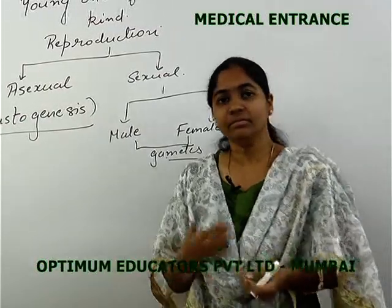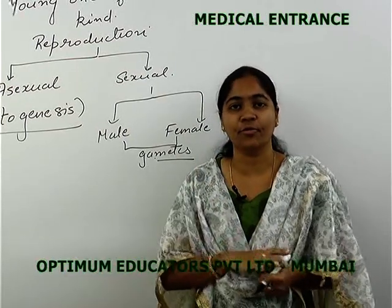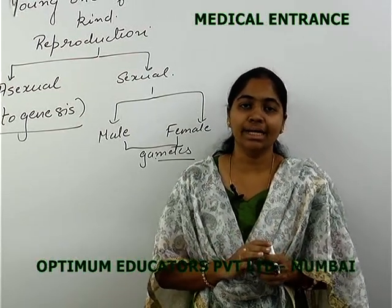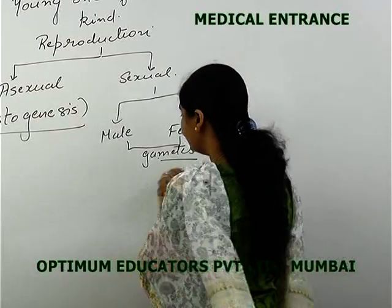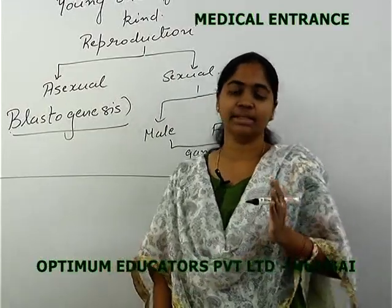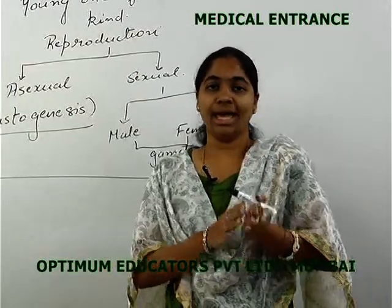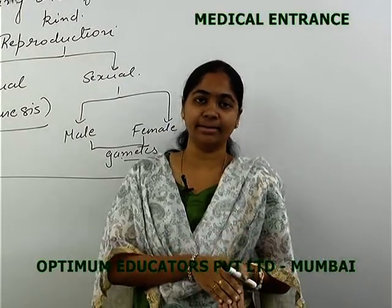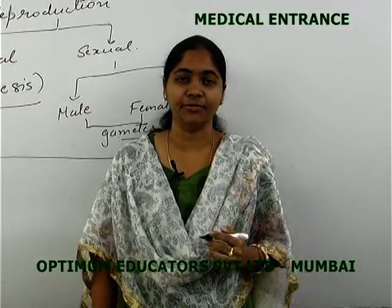Let us bring the discussion to the human system. Dimorphism is a process where two different types of bodies are produced — the male and the female body. Their characteristics in terms of physicality and sexuality are different, and therefore the kinds of gametes formed are completely different.